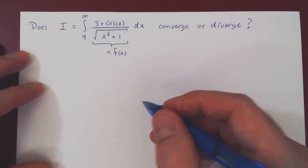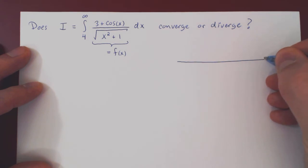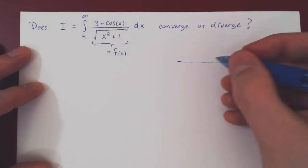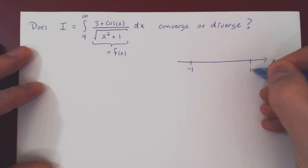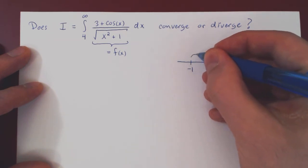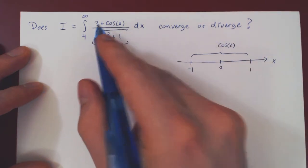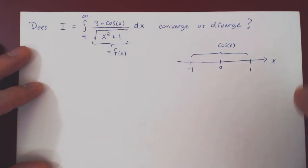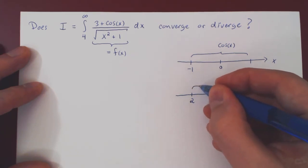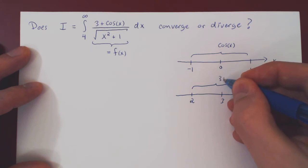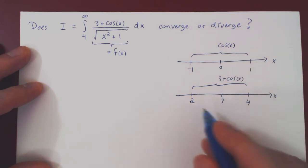What about 3 + cos(x)? Well, if you look at your real line, recall that cos(x) is always between -1 and 1. And if you add 3 to cos(x), you're shifting everything by 3, and so you get the following picture. If you add -1 to 3, you get 2. 3 + 1 is 4. And so you see that 3 + cos(x) is between 2 and 4.